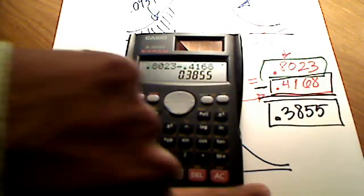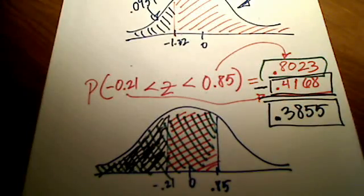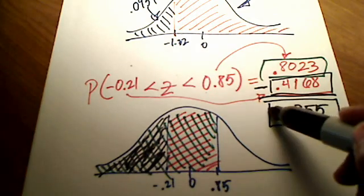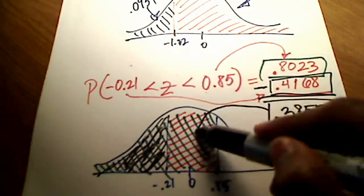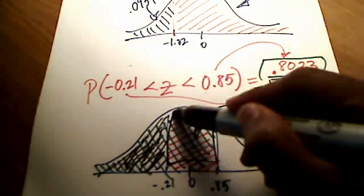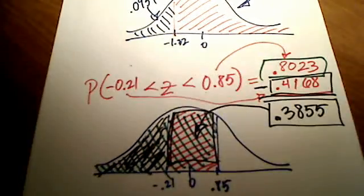So 0.3855 — four decimal places — is what I would punch into MyMathLab. That is the area sitting right in the middle between negative 0.21 and 0.85.